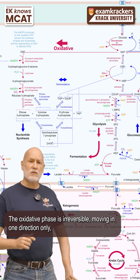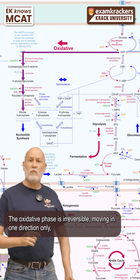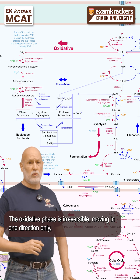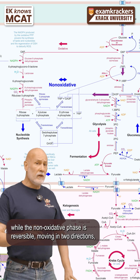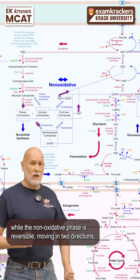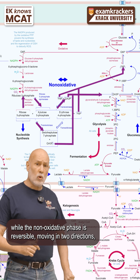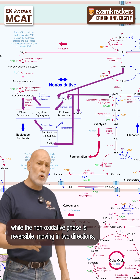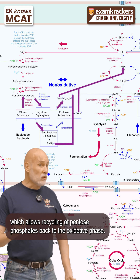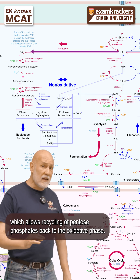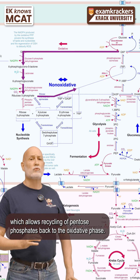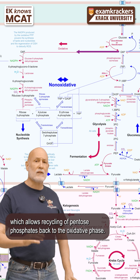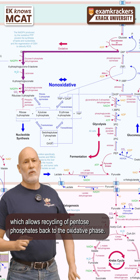The oxidative phase is irreversible, moving in one direction only, while the non-oxidative phase is reversible, moving in two directions, which allows recycling of pentose phosphates back to the oxidative phase.